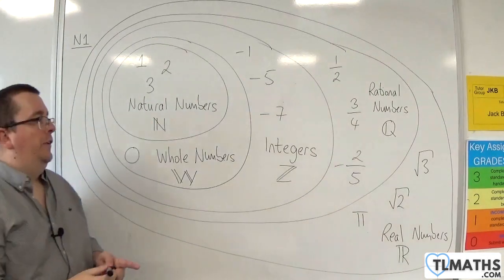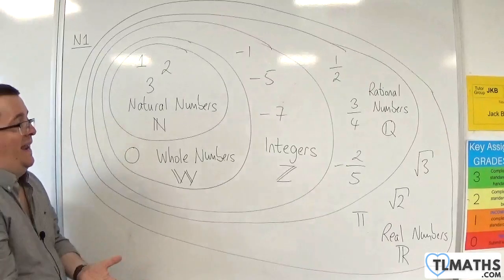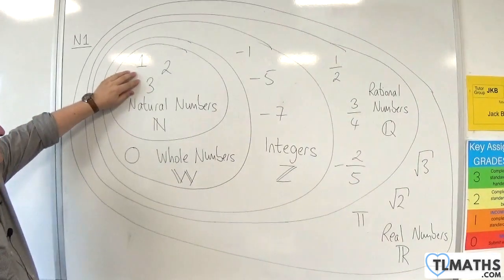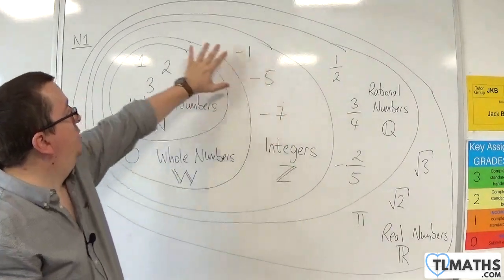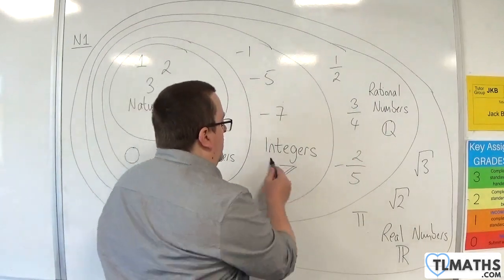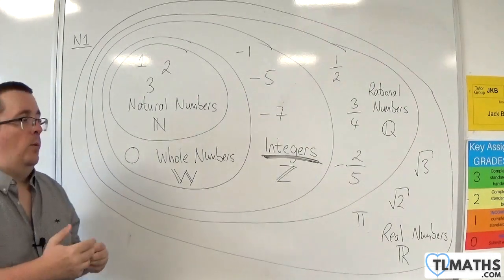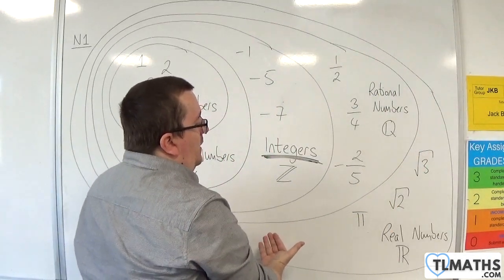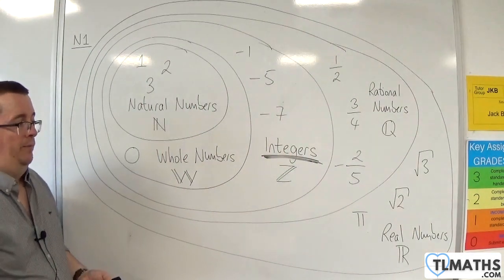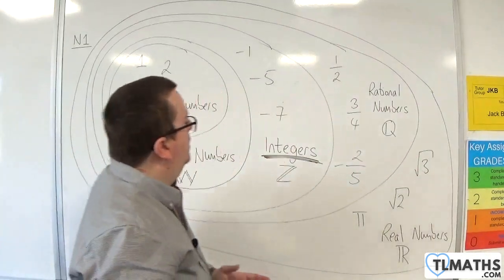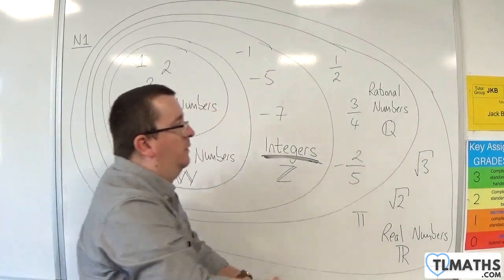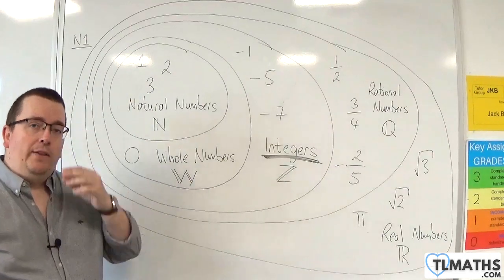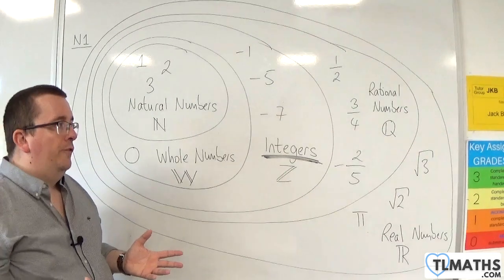So essentially, we will be dealing with all of these sorts of numbers as part of the GCSE Maths course — counting numbers like 1, 2, 3, and 0, and negative numbers, so we're dealing with integers. Then we introduce fractions and rational numbers, and then pi, root 2, root 3, and the real numbers. For GCSE Maths, you do not need to know these symbols or be able to recognise them, but it is useful, particularly if you are going on to A-level maths.